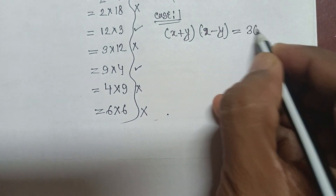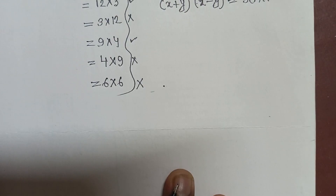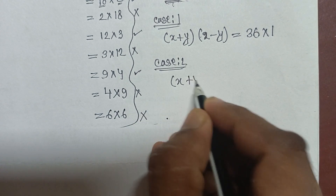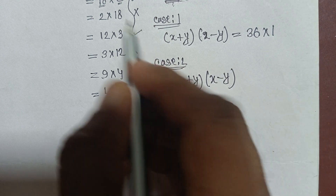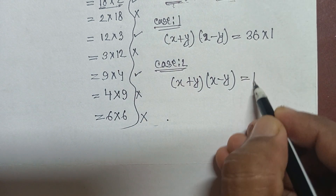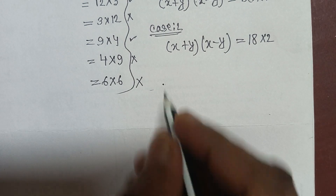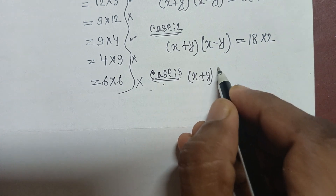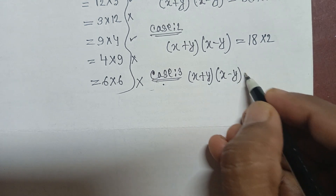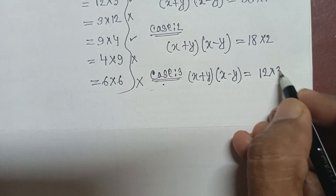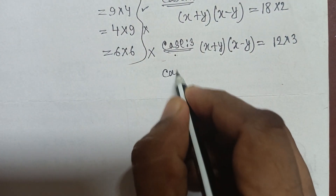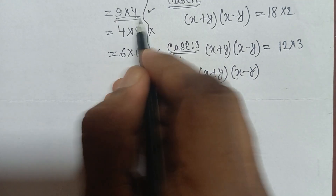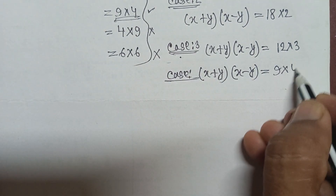Case 1: (x plus y)(x minus y) equals 36 times 1. Case 2: (x plus y)(x minus y) equals 18 times 2. Case 3: (x plus y)(x minus y) equals 12 times 3. Case 4: (x plus y)(x minus y) equals 9 times 4.